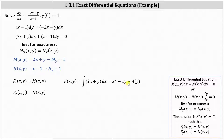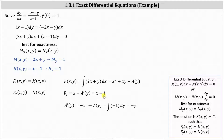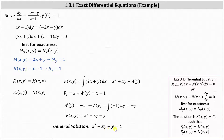With F = x² + xy + a(y), we take the partial with respect to y and set it equal to N. This gives x + a′(y) = x − 1, so a′(y) = −1. Integrating gives a(y) = −y. Therefore F = x² + xy − y, and the general solution is x² + xy − y = c.